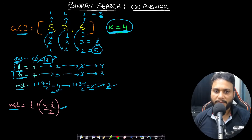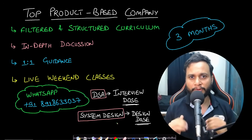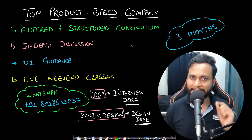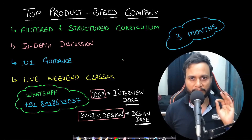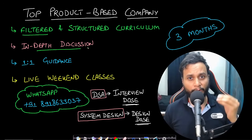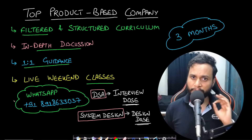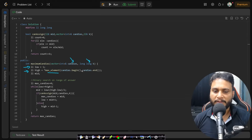The time complexity is O(N log R) where R is the maximum value of the array, and the space complexity is O(1). Now let's look at the code.